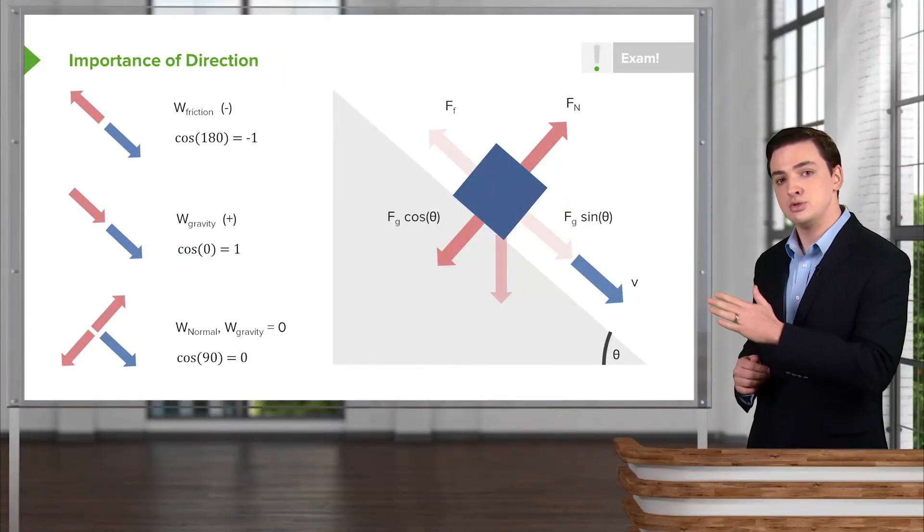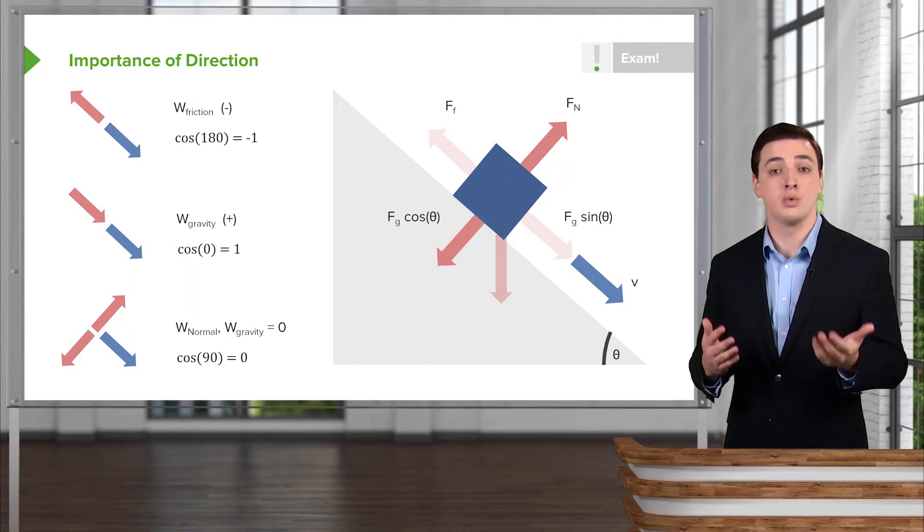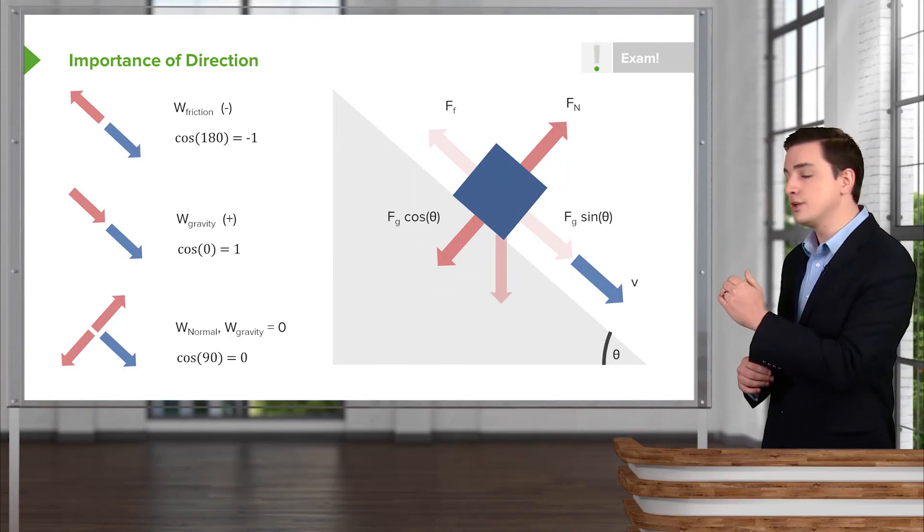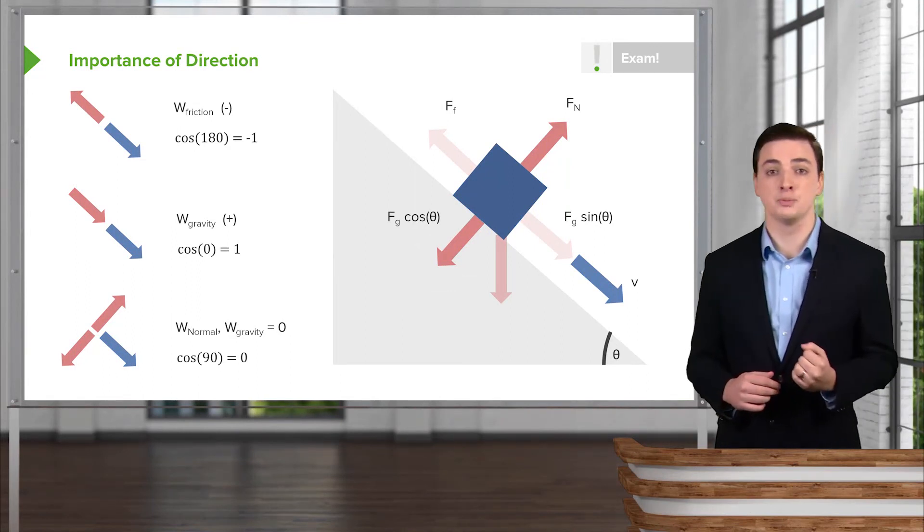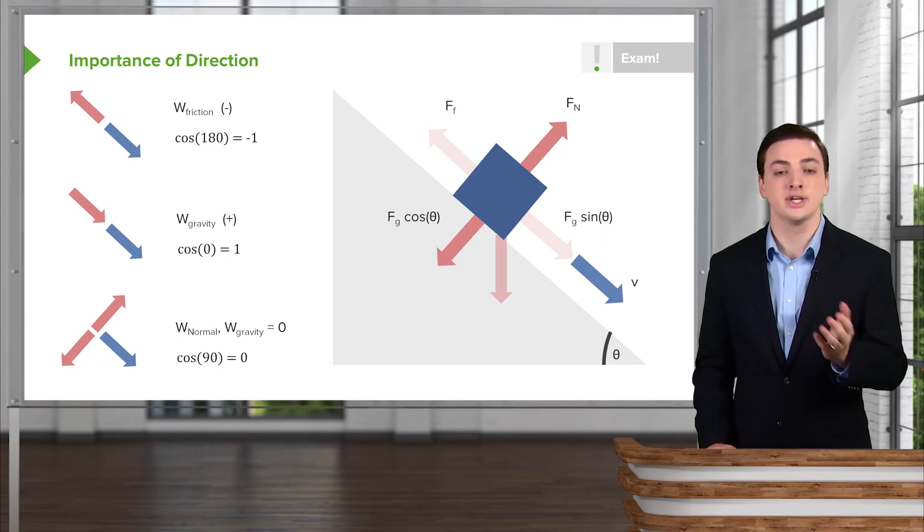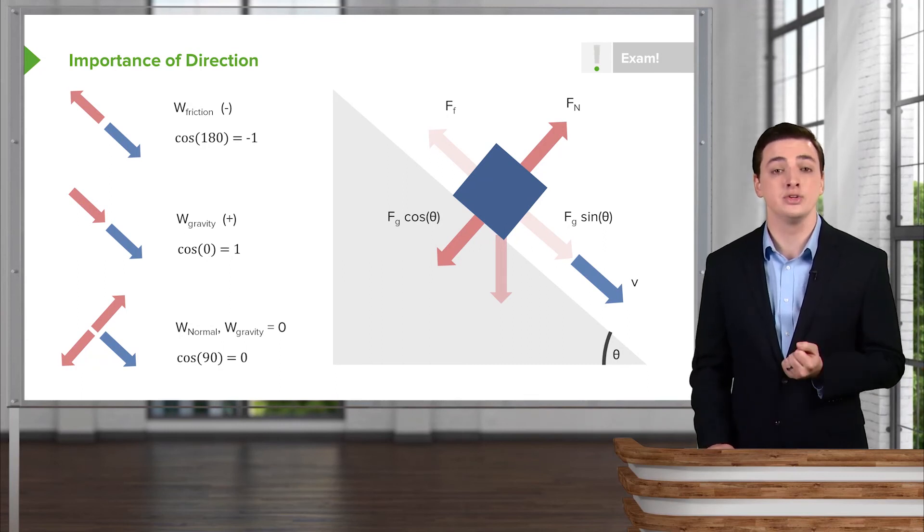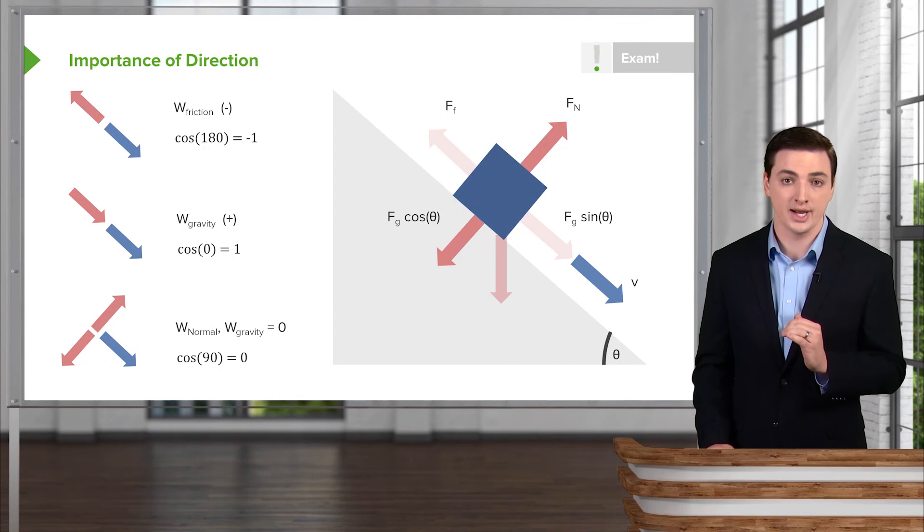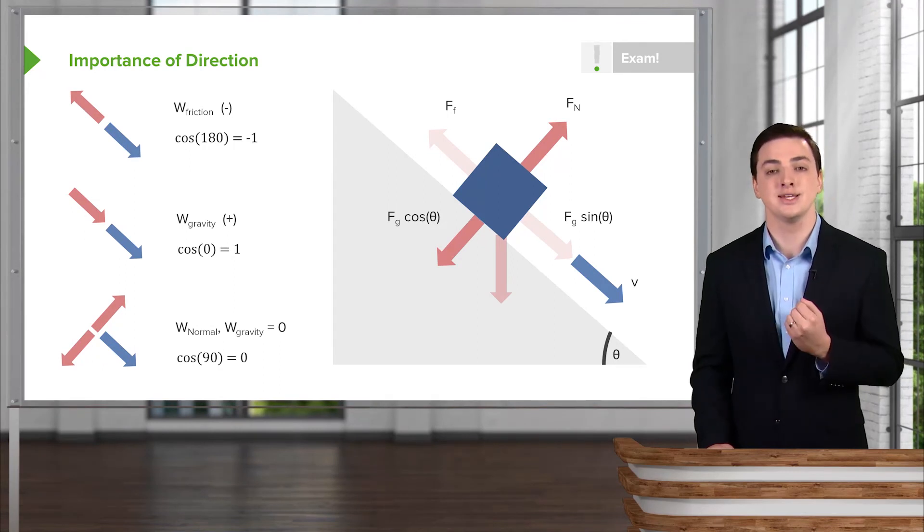But these two forces, both into or out of the slope in what we've often called the y-direction, are both perpendicular to the direction of motion, which is down the slope. And so when you analyze the cosine of theta, where theta, the angle in this case, is a perfect 90 degrees or right angles, you get cosine of 90 is zero.